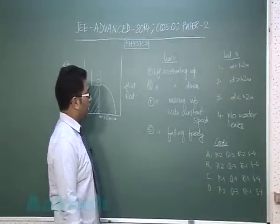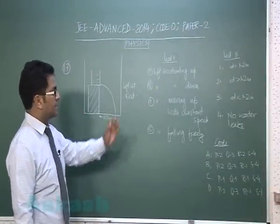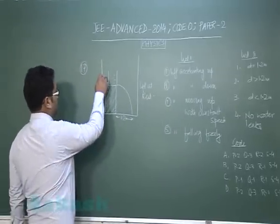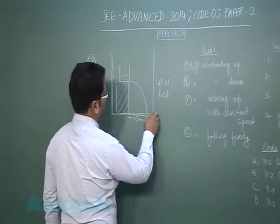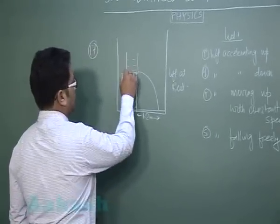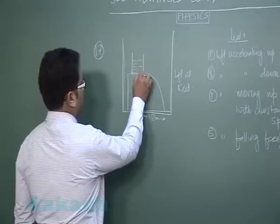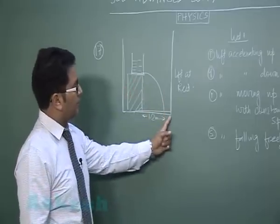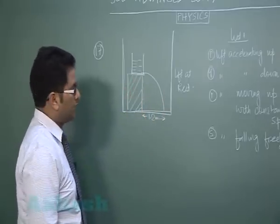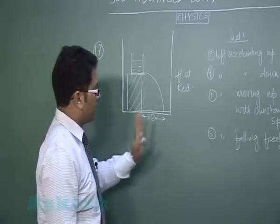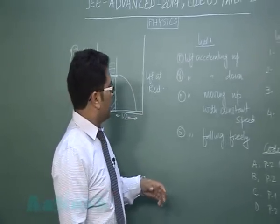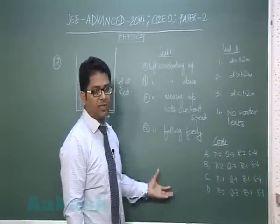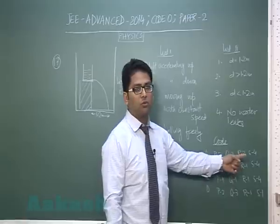Beyond question number 17, a list matching problem. We have list 1 and list 2. The situation is a lift at rest with a container having liquid and a small hole at the bottom. The efflux finally lands at a distance of 1.2 meters when the lift is at rest. List 1 shows the change in the condition of lift motion and list 2 gives the value of D.